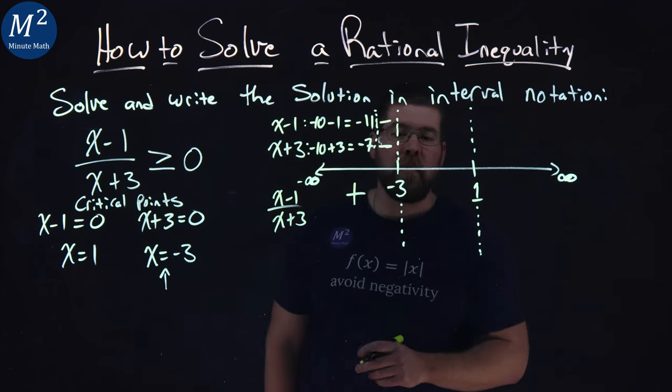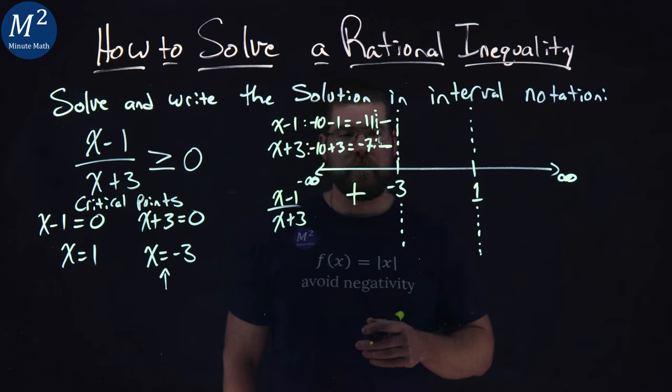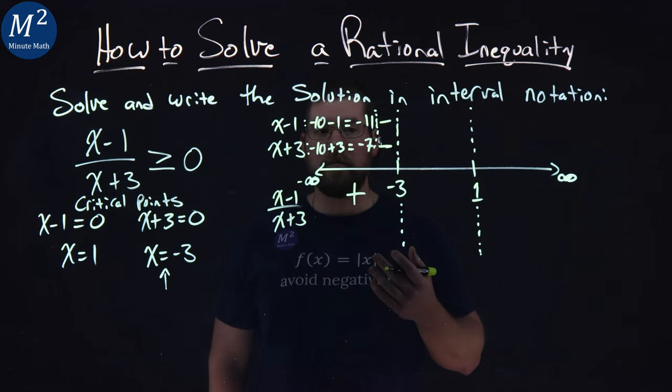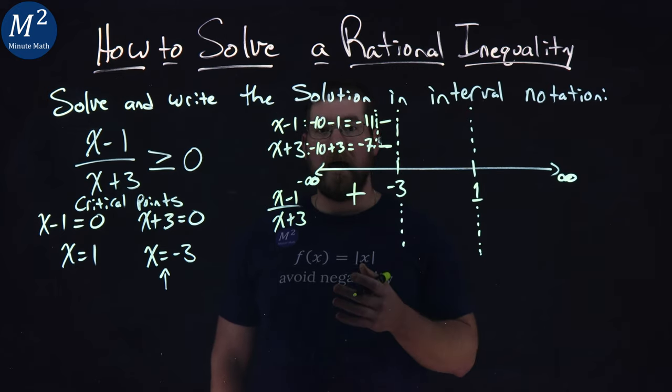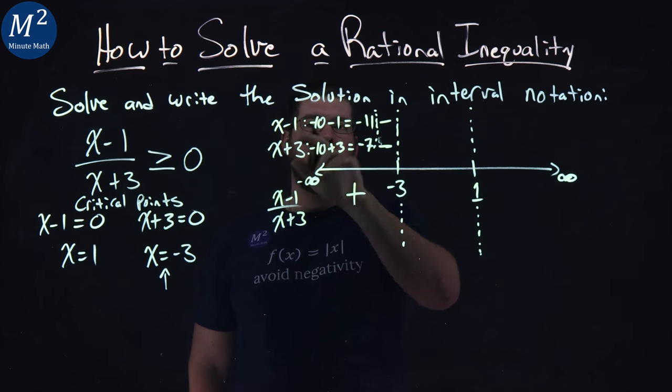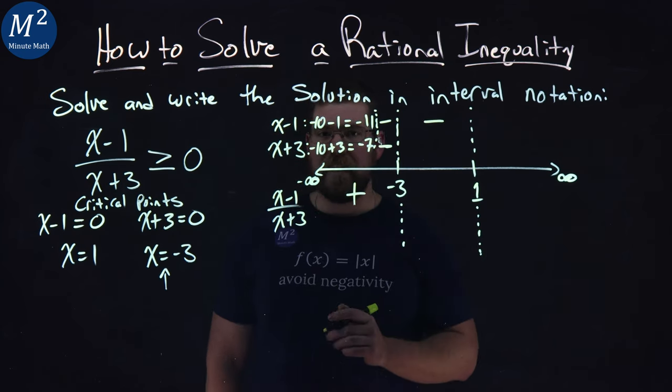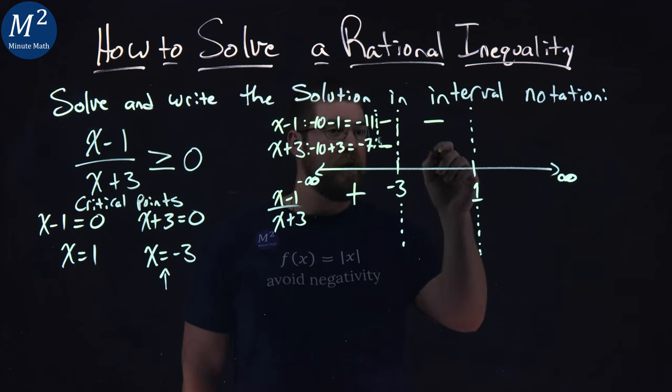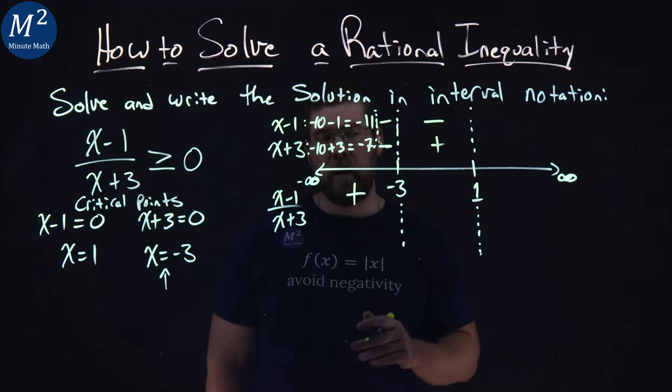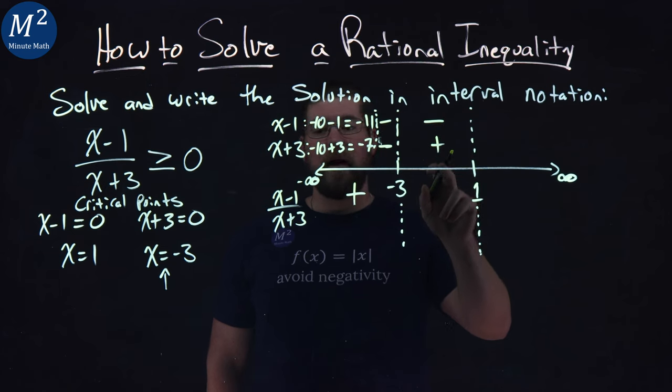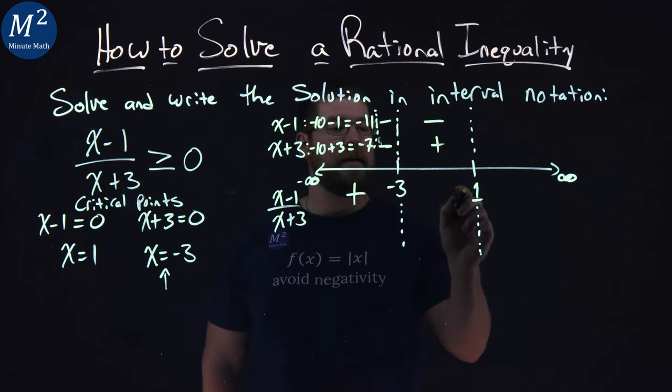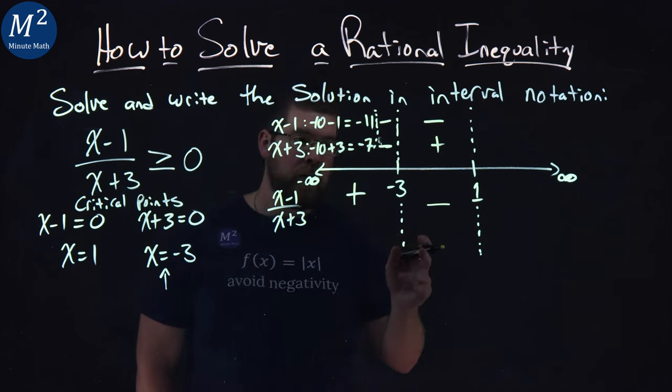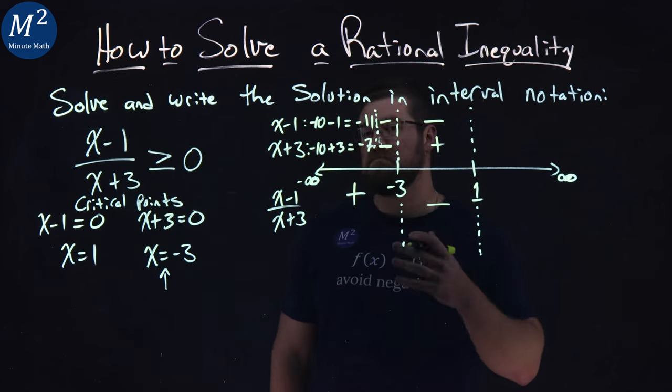Let's do the same thing between negative 3 and 1. An easy number to pick is 0. Put 0 in for x. 0 minus 1 is negative 1 or a negative. That's all I care about. 0 plus 3 is positive 3. We have a positive. So negative divided by a positive is negative. All values between negative 3 and 1 will be negative.